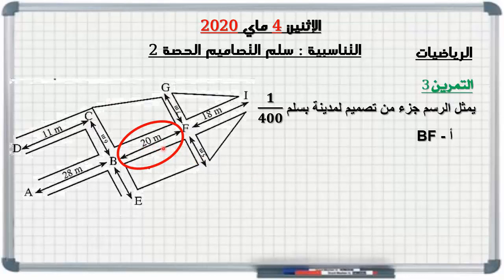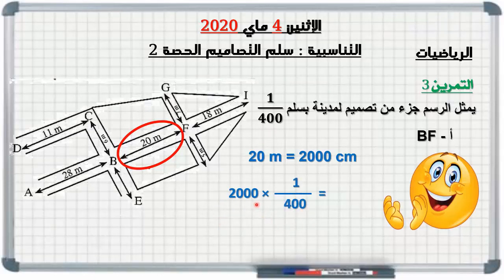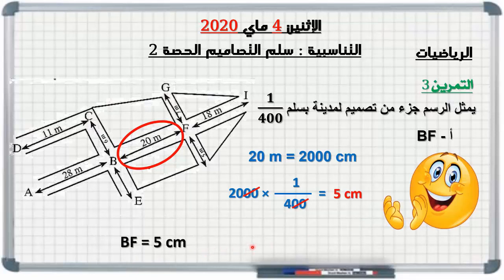نحول عشرون متر إلى سنتيمتر فتساوي ألفان سنتيمتر. نضرب هذه المسافة الحقيقية في السلم: ألفان في واحد على أربعمائة. نختزل بصفرين فتبقى عشرون في واحد على أربعة، وعشرون مقسومة على أربعة تساوي خمسة سنتيمتر. إذن المسافة BF على التصميم تساوي خمسة سنتيمتر.